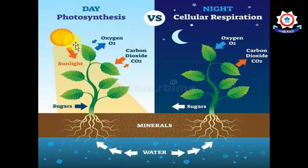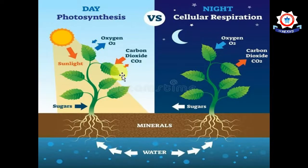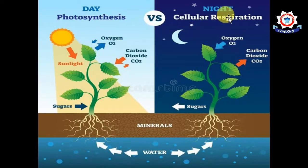In sunlight, plants make oxygen by photosynthesis. They make more than they need for respiration, and so the spare oxygen goes into the atmosphere.